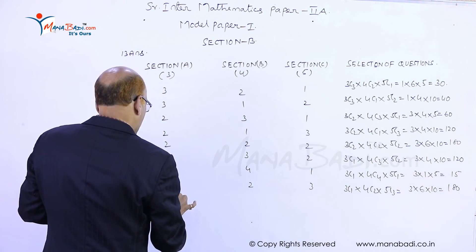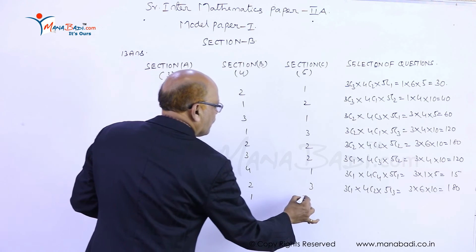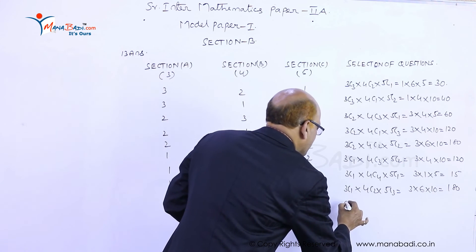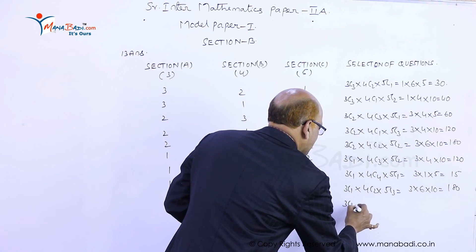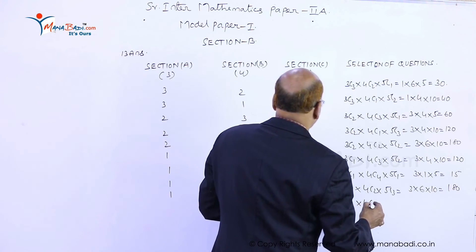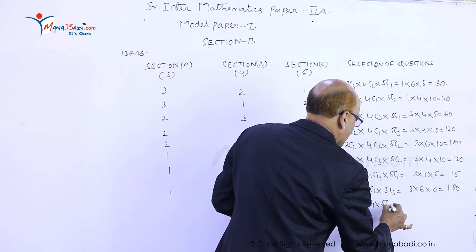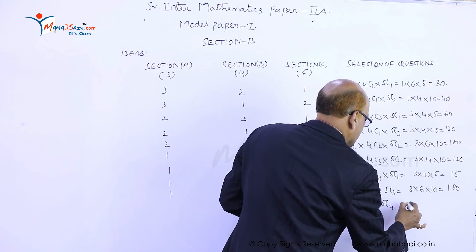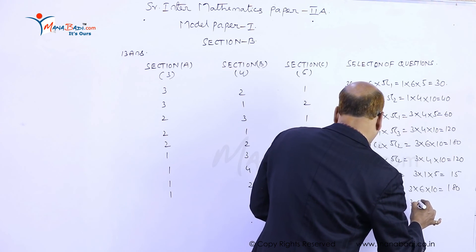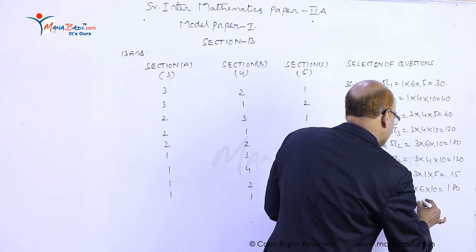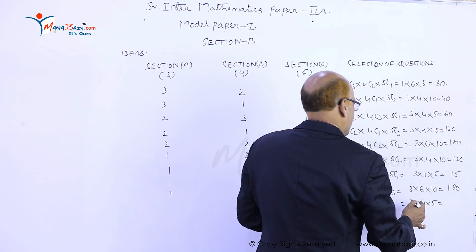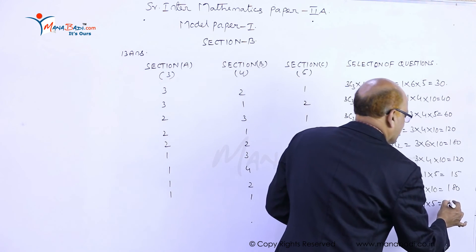Last combination: one from A, one from B, and four from C. It will be 3C1 into 4C1 into 5C4. 3C1 is 3, 4C1 is 4, and 5C4 is 5. So 20 into 3 equals 60.